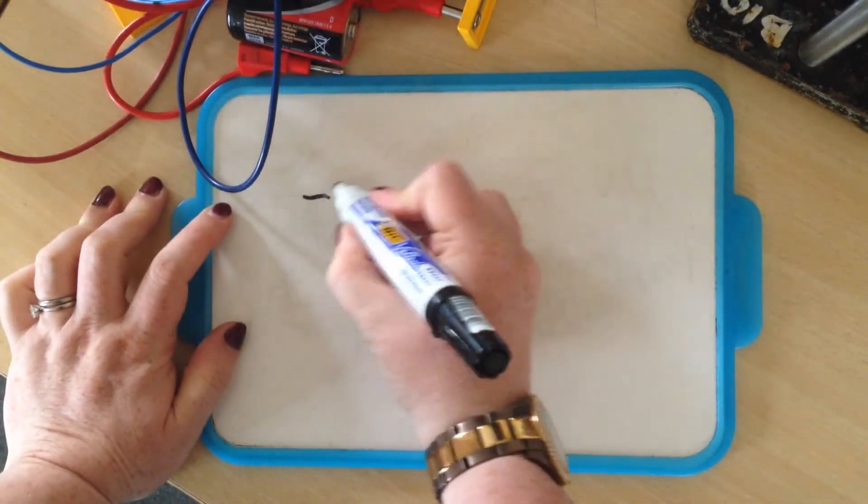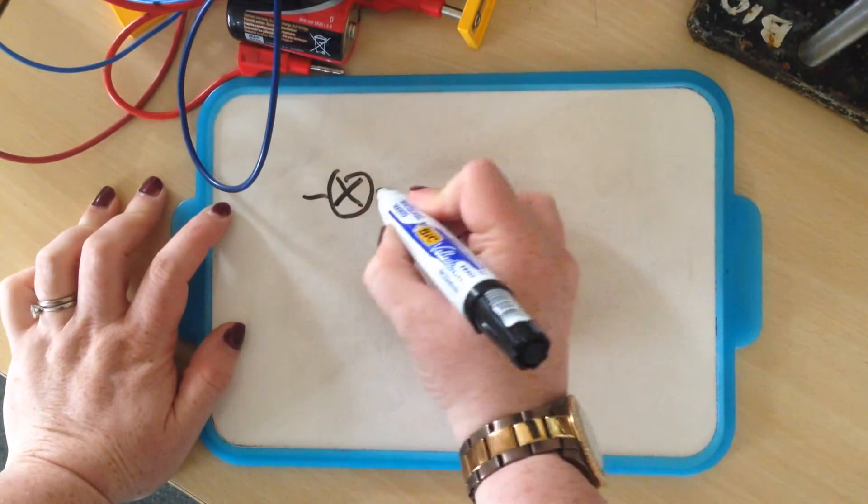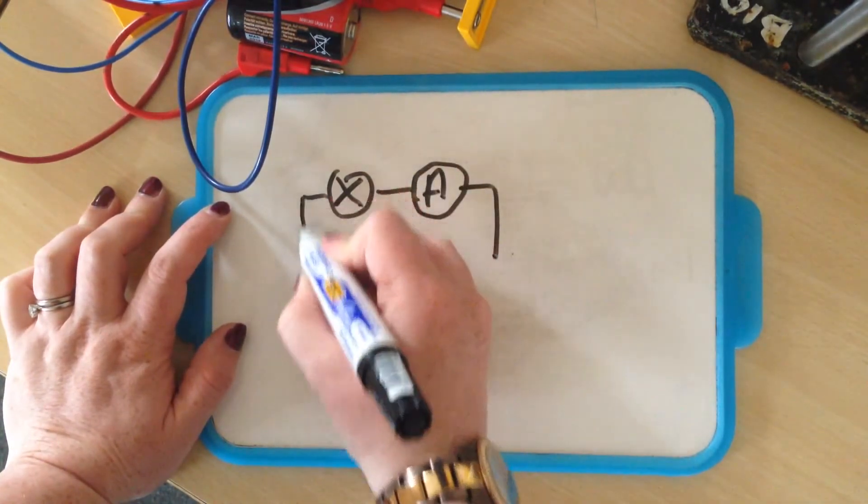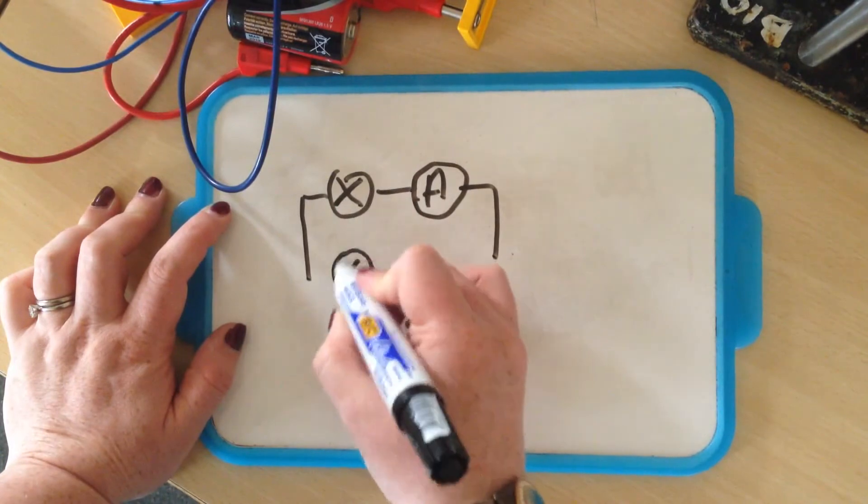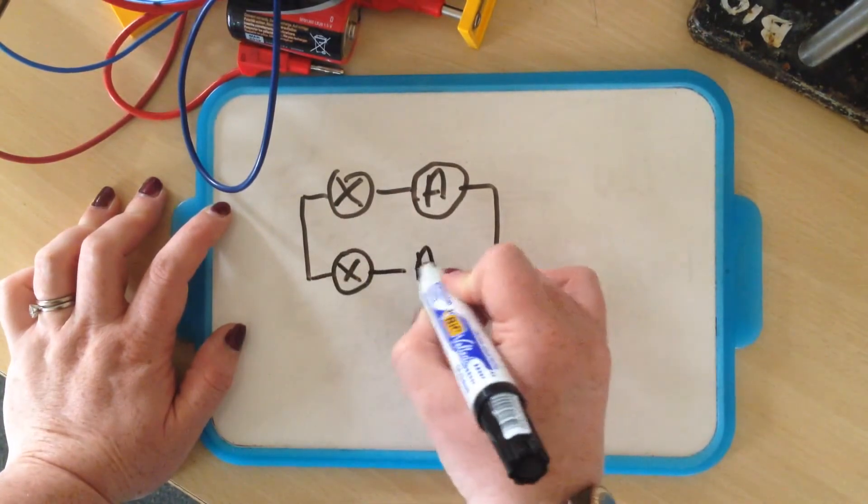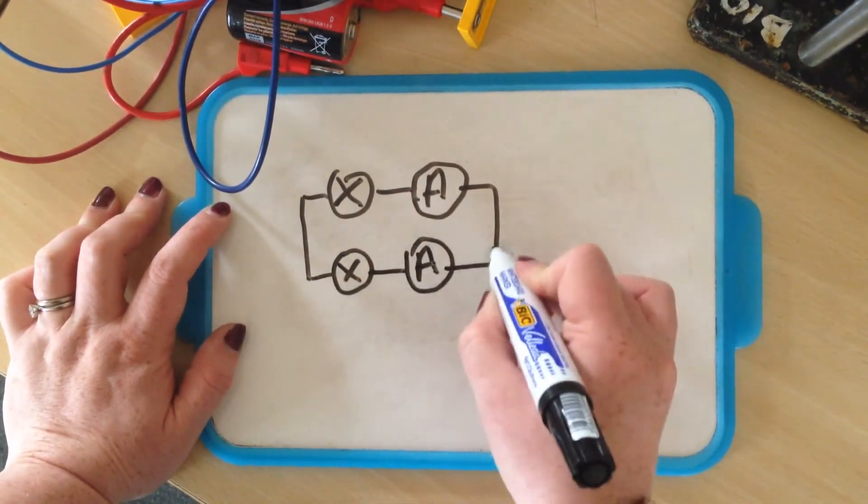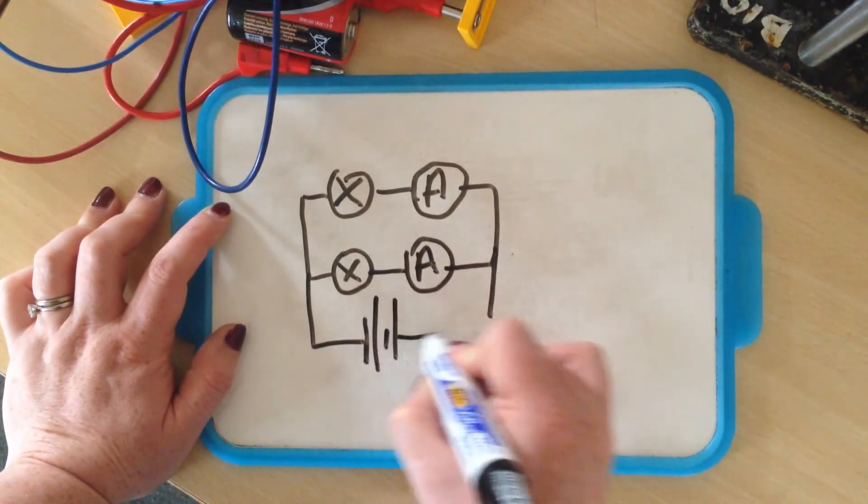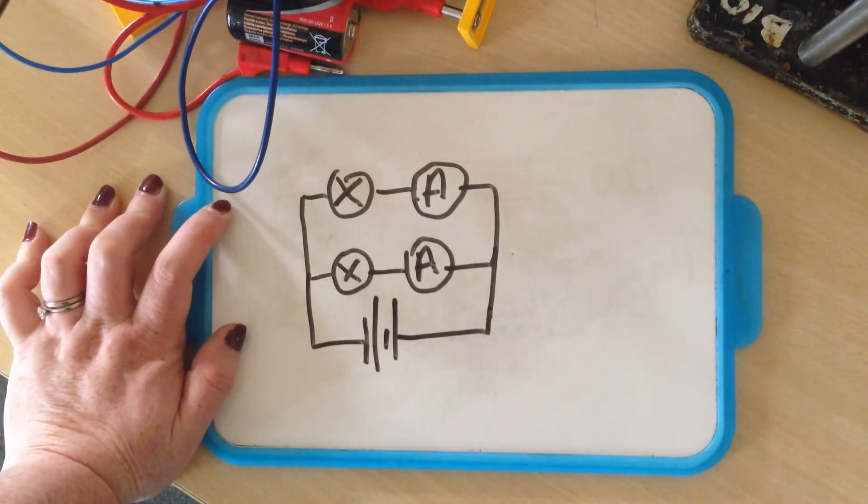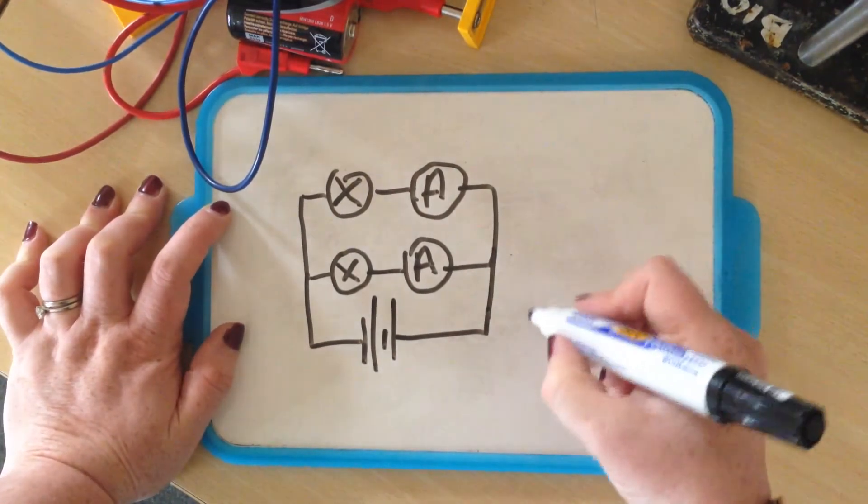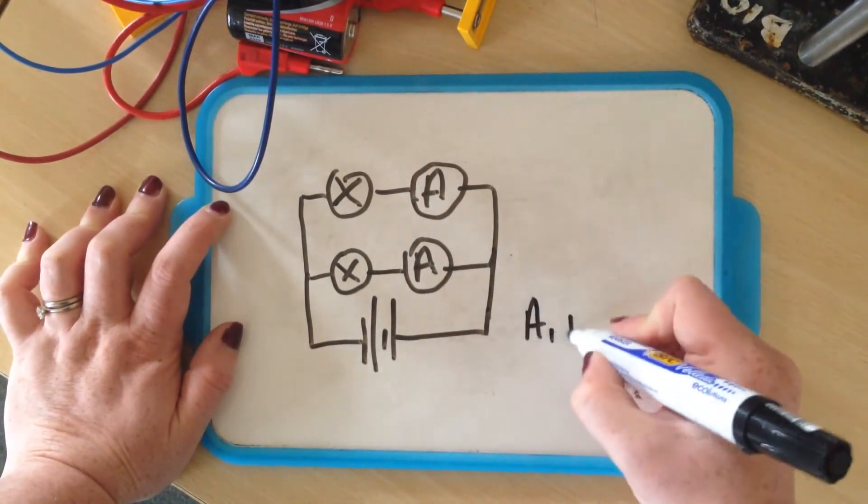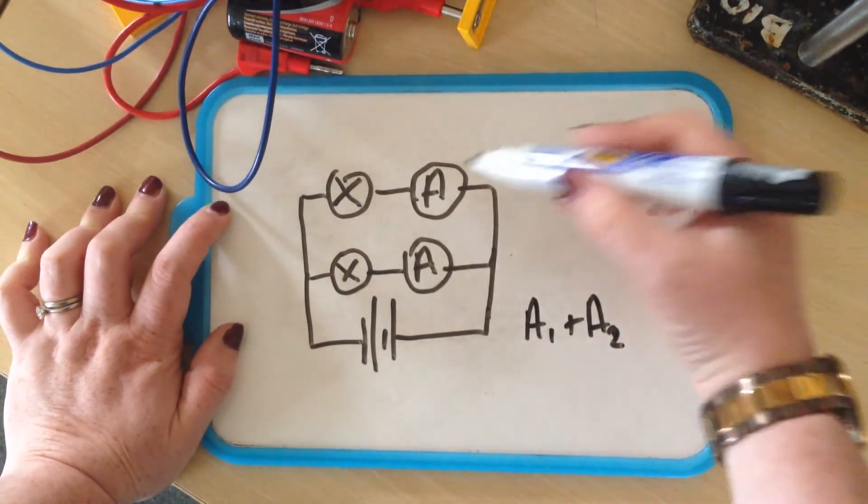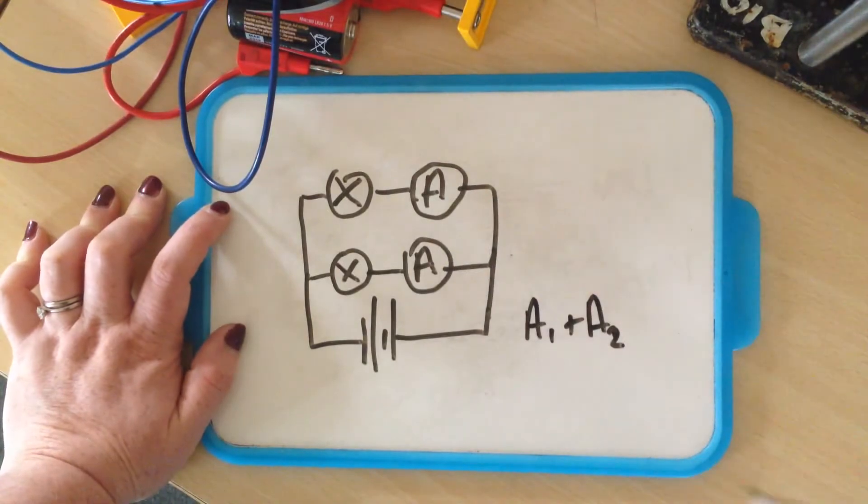If we were going to draw that, we had our bulb which was connected in series because ammeters always have to be connected in series, connected to another bulb which was connected to another ammeter and then this was connected to our battery down here. And for a parallel circuit, the reading of ammeter one will need to be added to ammeter two to get the total current.